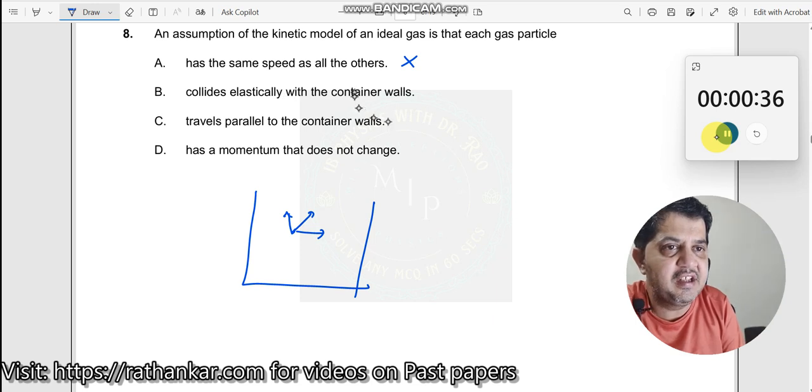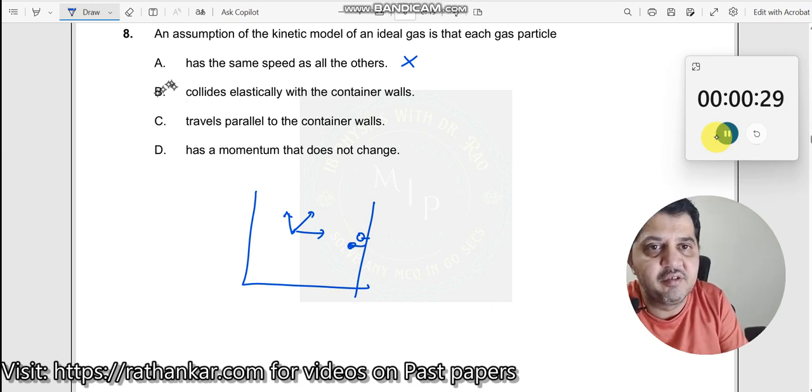Collides elastically with the container walls, definitely this is correct. It goes, it hits here and comes back, so there is an elastic collision being seen. So B is the right answer, the rest of them are also incorrect.